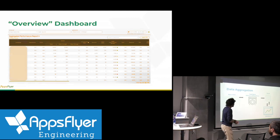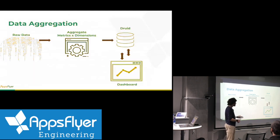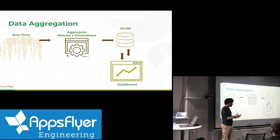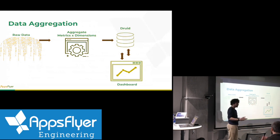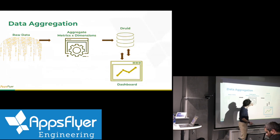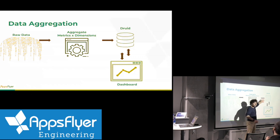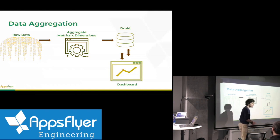The flow here is pretty straightforward — what you might imagine. We take our raw data and to make it manageable we aggregate it. We accumulate metrics by various dimensions that are relevant to the client — in this case mainly media source and campaign. Then we load that data into a Druid database and through various layers we end up querying that data to show on the dashboard.